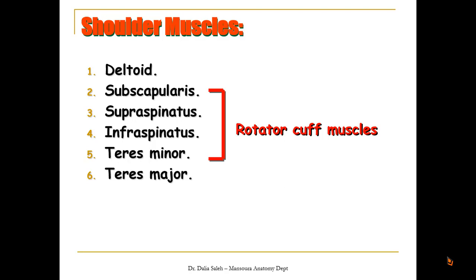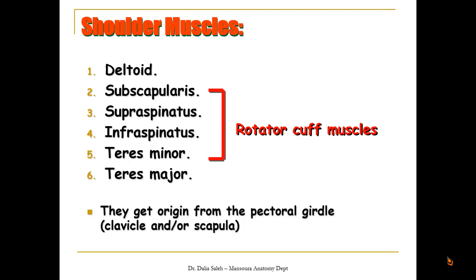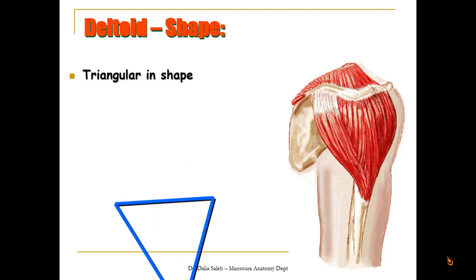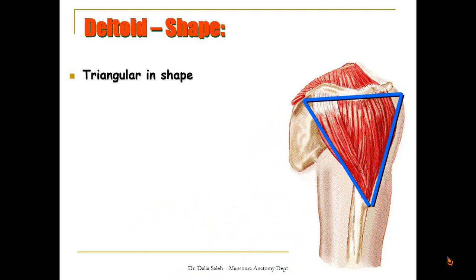The shoulder muscles are: the deltoid, subscapularis, supraspinatus, infraspinatus, teres minor, and teres major. The middle four are also called the rotator cuff muscles because they rotate around the shoulder joint like a cuff. These muscles get their origin from the pectoral girdle — either the clavicle or the scapula — and are inserted into the humerus. The deltoid muscle is triangular in shape; that's why it gets its name, as 'delta' means triangular and '-oid' means looks like.